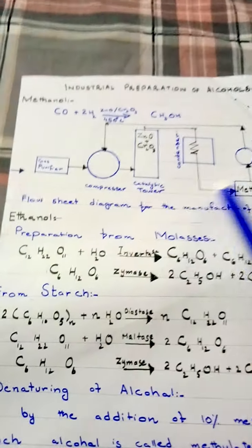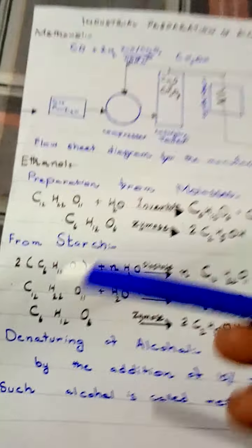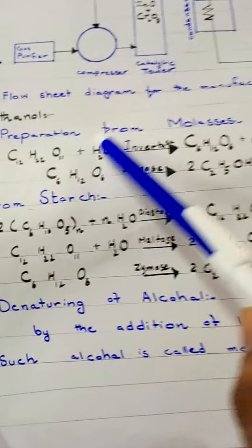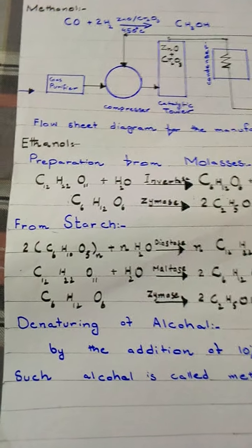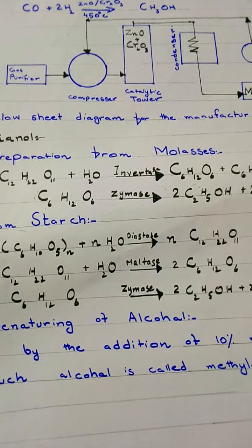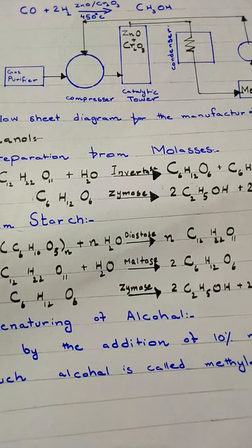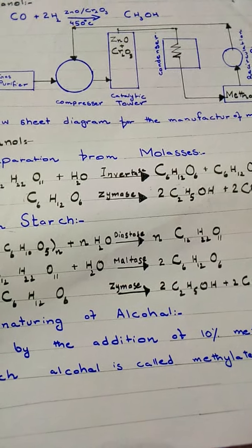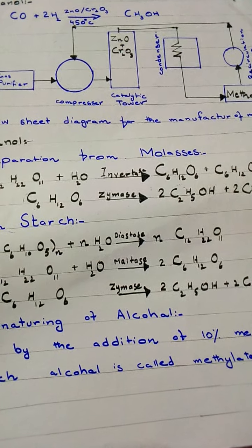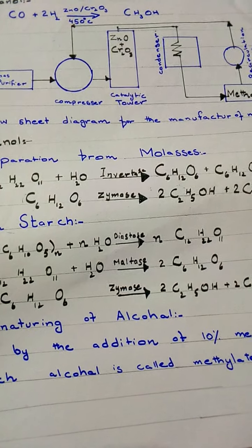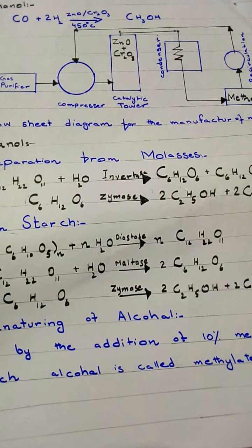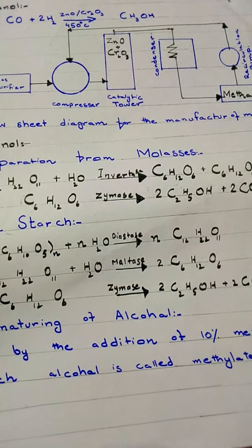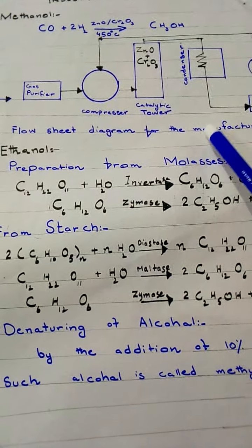Now we will study ethanol (CH₃CH₂OH, two carbon atoms). Ethanol is prepared on an industrial scale worldwide by the process of fermentation. Fermentation is a biochemical process which occurs in the presence of certain enzymes secreted by microorganisms such as yeast. The optimum temperature for fermentation is 25 to 35°C. Proper aeration, dilution of solution, and absence of preservatives are essential conditions. In Pakistan, ethanol is prepared by fermentation of molasses, starch, grains, or fruit juices.